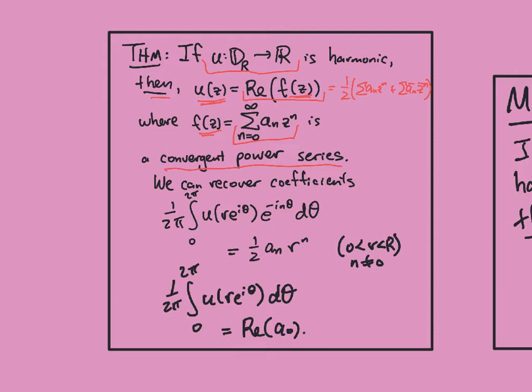We can also recover the coefficients in this power series using some integrals along circles, and this is related to Fourier analysis. But I can compute one-half a_n r to the n using this integral here on the circle of radius little r, where little r is just less than big R. This is for the case where n is not zero. The case n equals zero, I can compute here. Notice we only really need to know the real part of the zeroth coefficient because the imaginary part disappears anyway.